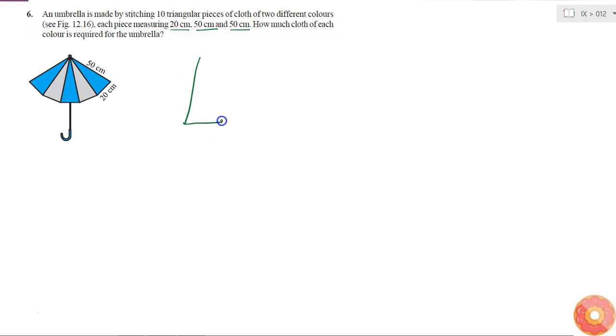So each piece of cloth I can consider as a triangle which has sides 50cm, 50cm and 20cm. So how much cloth of each color is required for the umbrella?